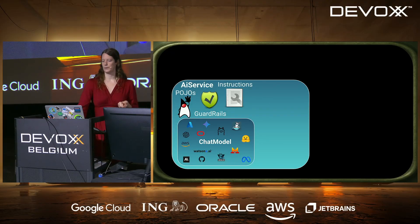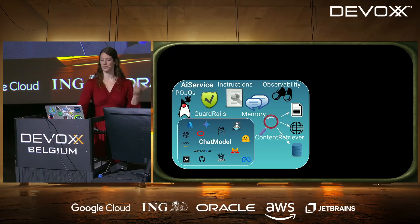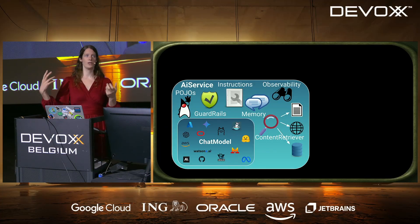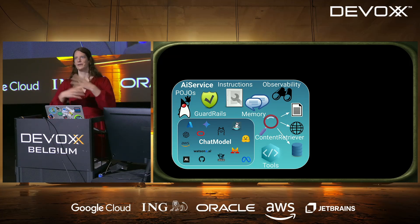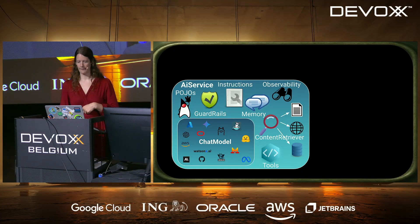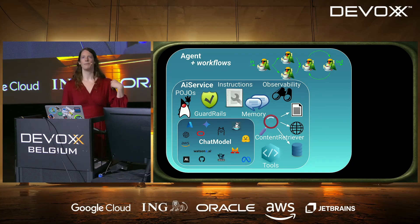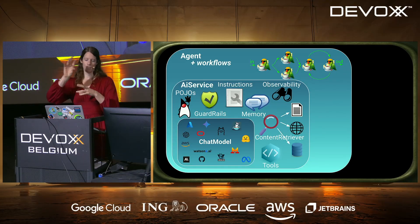We also handle instructions to make the model behave as we want, memory management in different ways, observability to keep your app in check, and content retrievers — very important — to pull information from company documents, APIs, or databases, giving the model knowledge beyond its training data. Then there are tools, where we tell the model which tools are available, it calls them when needed, we run them and send the answer back. Almost all this functionality is also supported in agents.